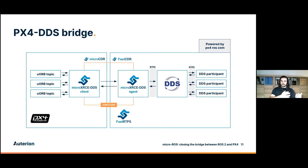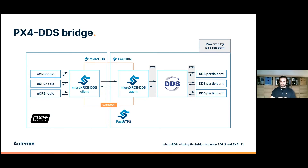Comparing the old and new architecture: previously we had the client and agent for the micro-RTPS bridge. Now we have the micro-XRCE-DDS client on the PX4/flight controller side and the micro-XRCE-DDS agent on the companion computer side, which is directly embedded in the DDS domain and communicates via RTPS. We may call this the micro-DDS bridge — it's not just RTPS anymore, we are moving to full DDS.